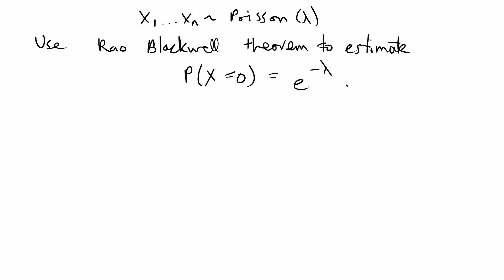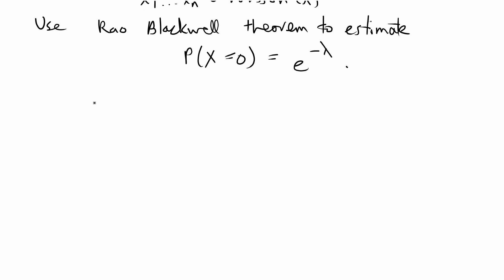Hey guys, in this video I'm going to do this problem. We're given variables that come from a Poisson distribution and we're asked to use the Rao-Blackwell theorem to estimate the probability that the x's are equal to zero, which is equal to e to the negative lambda. So let's go ahead and get started.